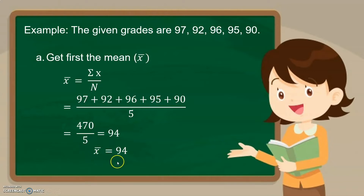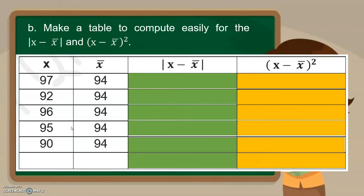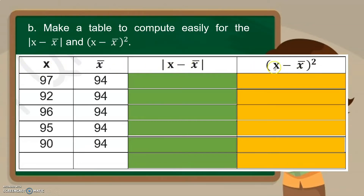Remember this mean because we will use it in the following steps. We now make a table with four columns: x (the score), the mean, the absolute value of x minus mean, and the square of x minus mean. The scores are 97, 92, 96, 95, and 90, and the mean is 94.